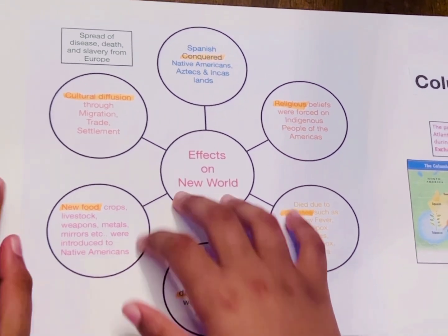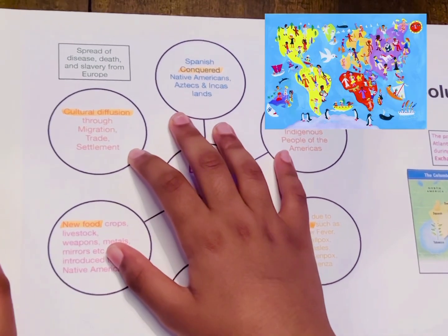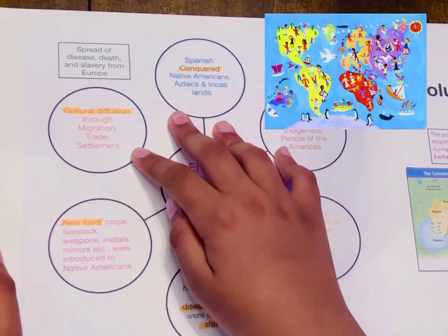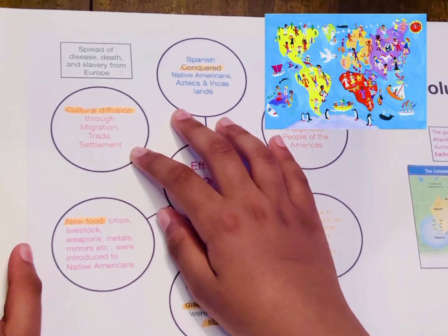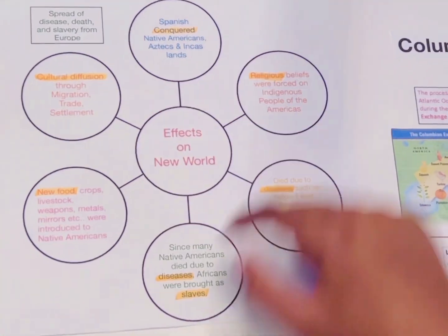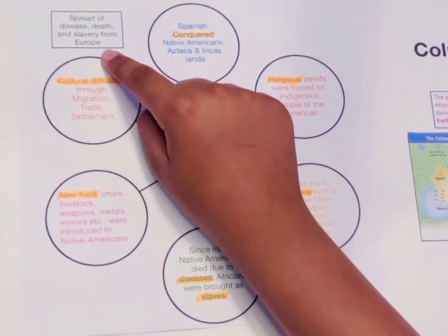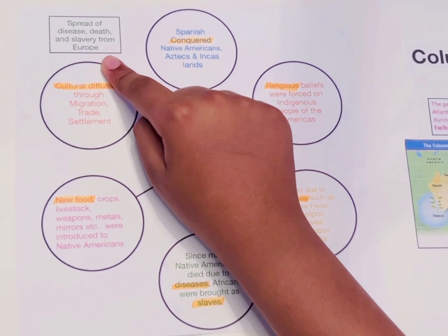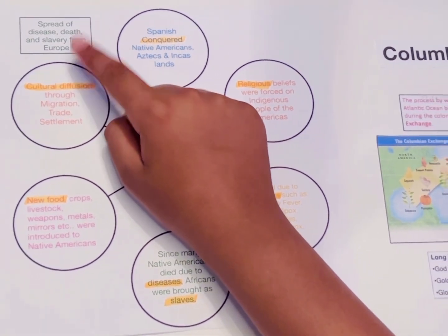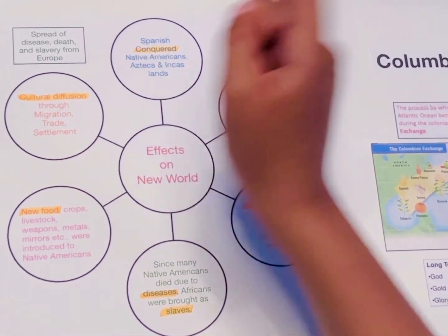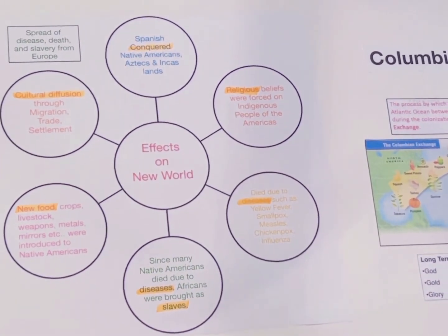And there was also a cultural diffusion through migration, trade, and settlement. Because of all this, the spread of debt, disease, and slavery from Europe was brought to the new world.